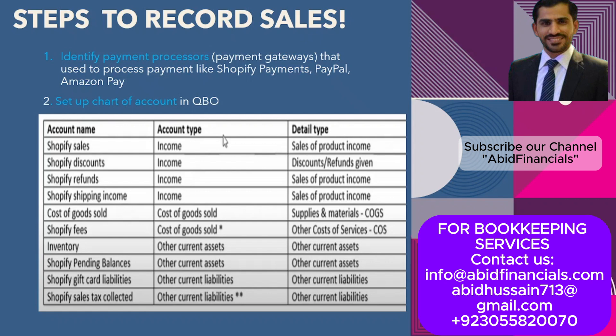Inventory needs to be reported as a balance sheet item, with account type 'Other Current Assets.' Shopify Pending Balances would also be part of Other Current Assets. Shopify Gift Card Liabilities would have an account type of 'Other Current Liabilities,' as these are amounts we need to pay in the future. Shopify Sales Tax collected on sales is also part of Other Current Liabilities.